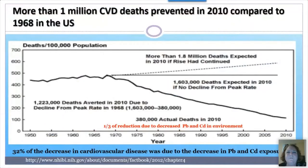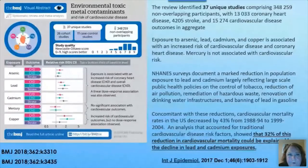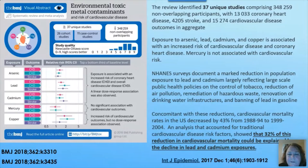Looking at the million cardiovascular deaths prevented between 1968 and 2010, there's been a 46% total reduction in cardiovascular disease from that peak. Researchers believe a third of that reduction is due to decreased lead and cadmium in the environment. They've analyzed 37 unique studies with large populations and found that a 43% decrease in US CV rates — roughly a third of cardiovascular mortality reduction — can be directly explained by the decline in lead and cadmium.